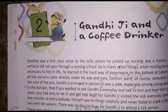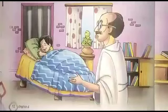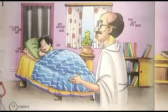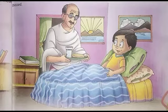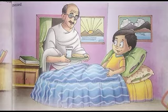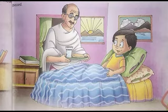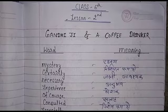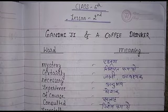Hello students, welcome. I am here to write the word meanings and question answers for your English subject. This chapter name is 'Gandhiji and a Coffee Drinker.' In this video you will get question answers and difficult word meanings. There are some difficult words in this chapter which will create a hindrance in understanding it smoothly, so we will write the word meanings which I have selected for you.